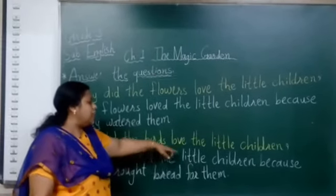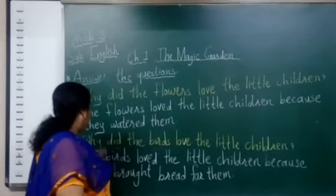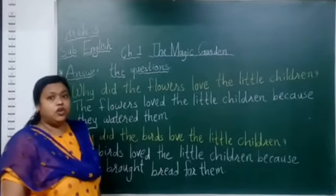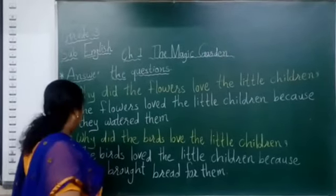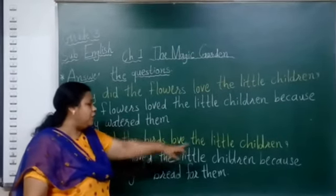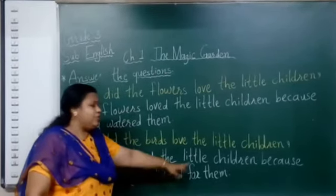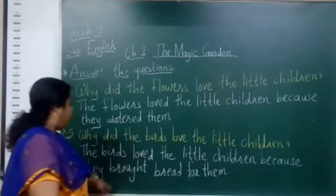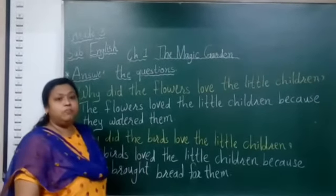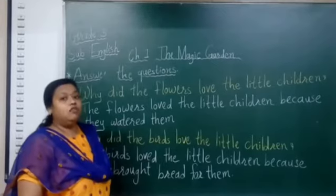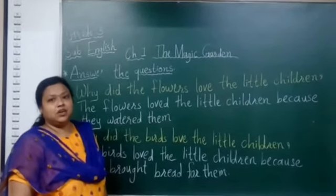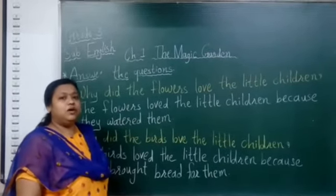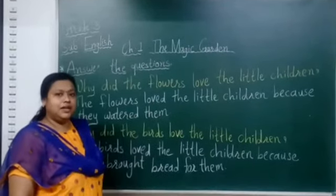Why did the birds love the little children? Jho birds thay, woh kyu bachyo ko pyaar karte thay? The answer is: the birds loved the little children because they brought bread for them. Birds little children ko bahot pyaar karte thay.